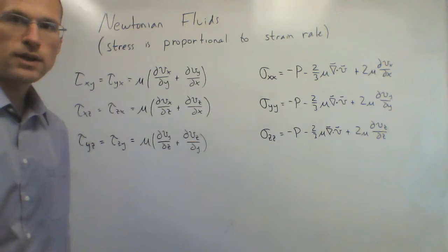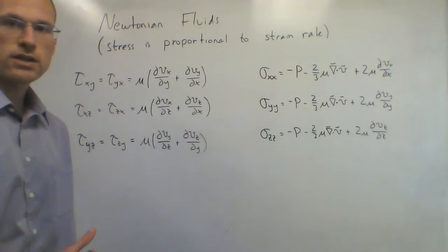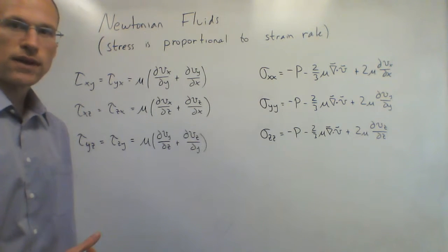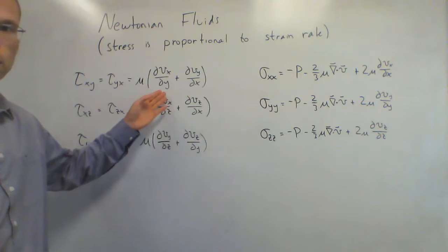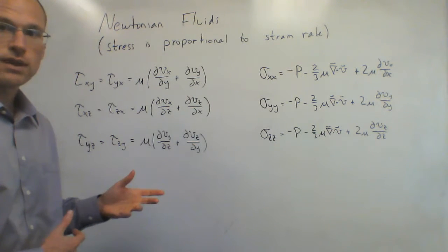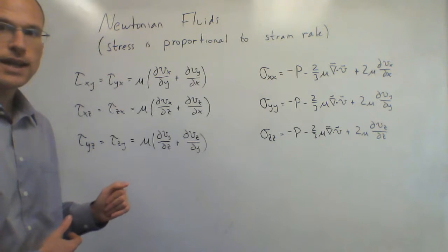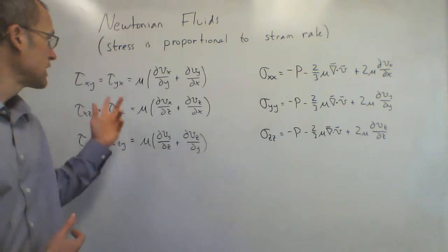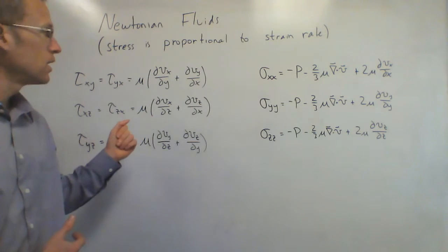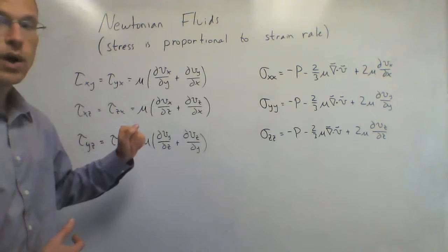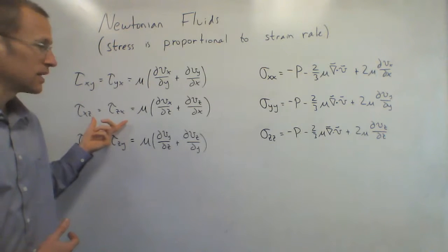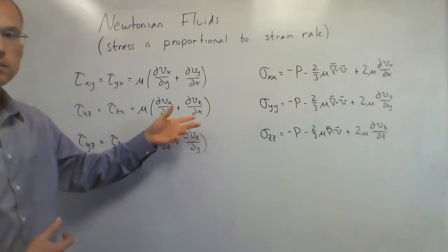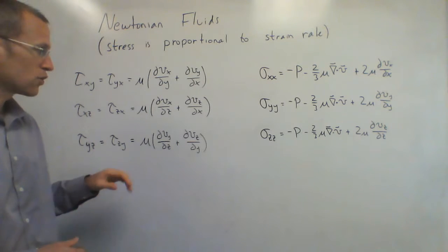To do this, we're going to assume that the fluid is Newtonian. A Newtonian fluid is one where the viscous stress is proportional to the strain rate. We've had equations for shear stress tau_xy that look like mu times dVx/dy. Now that we can have velocity in all three directions, tau_xy equals tau_yx takes into account both directions: dVx/dy and dVy/dx, multiplied by mu. Similarly for other directions, tau_xz and tau_zx involve dVx/dz and dVz/dx, both multiplied by mu. Those are the shear stresses.